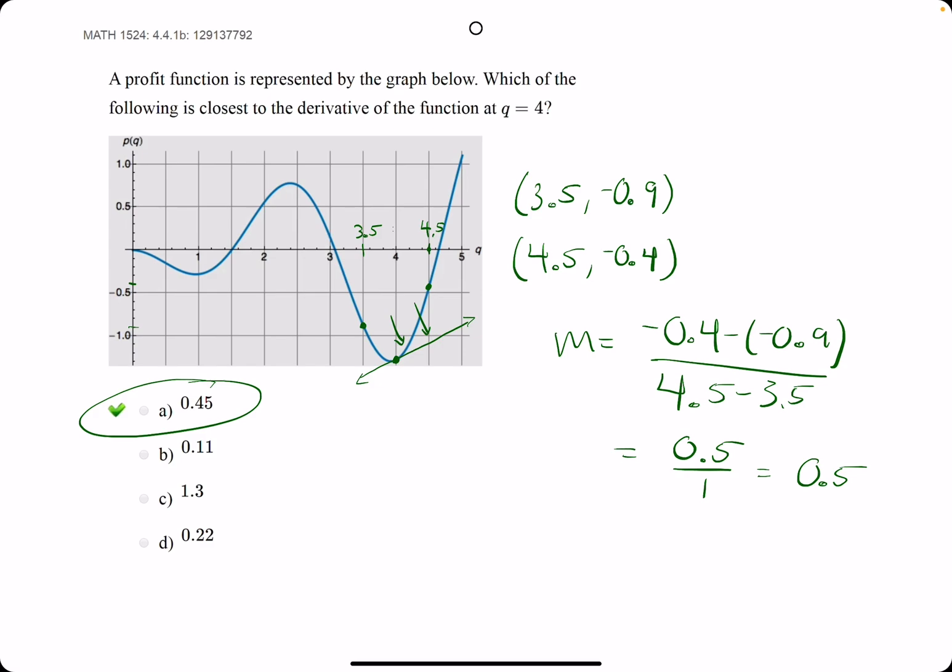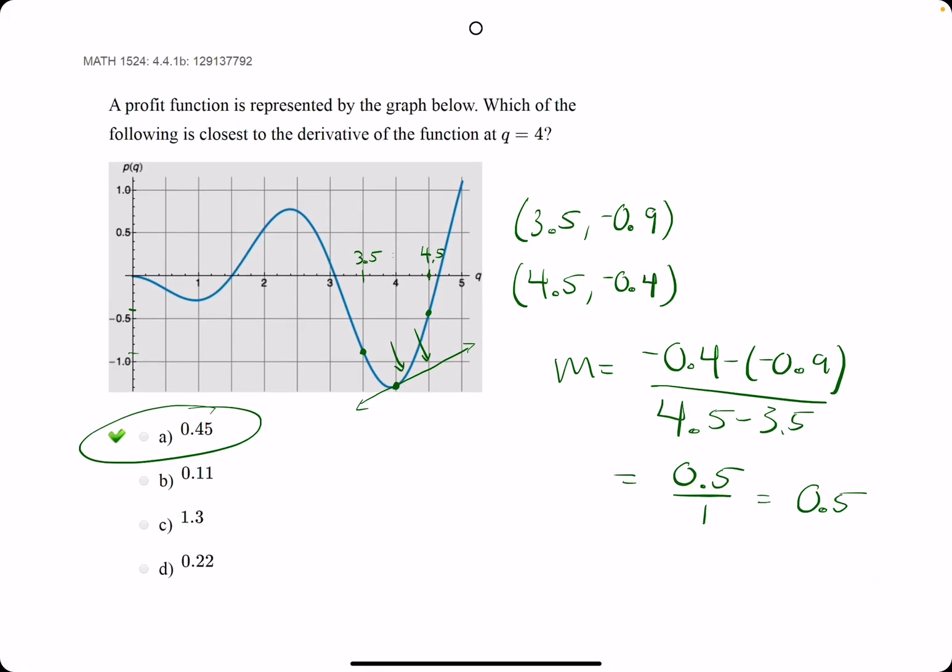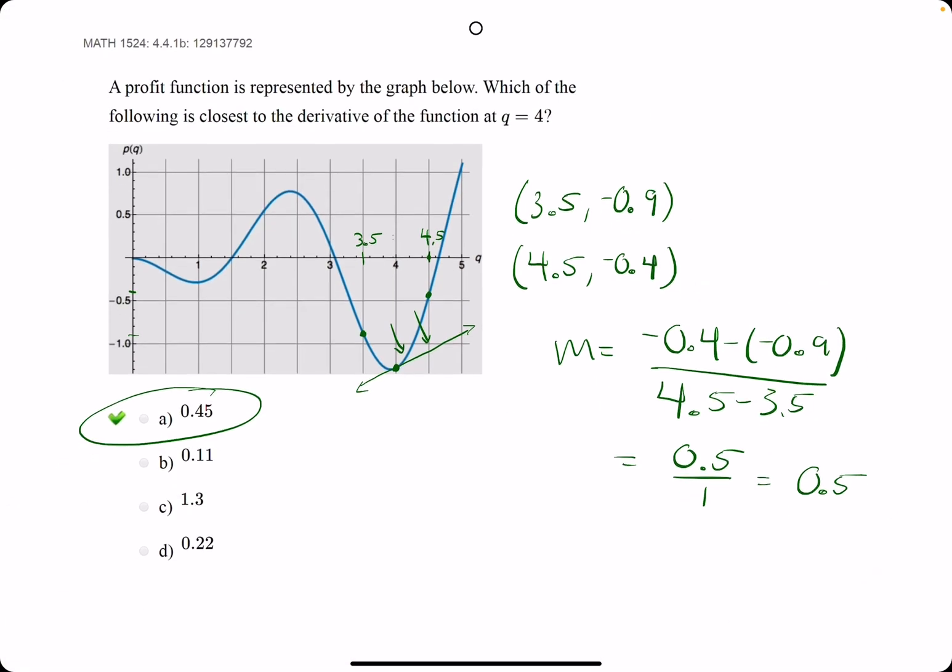Find the Y values at those two X values, left and right, and then find the slope between those two points. And that'll be a good estimate of the slope right at, in this case, Q equals 4, or whatever the desired X or Q value is.